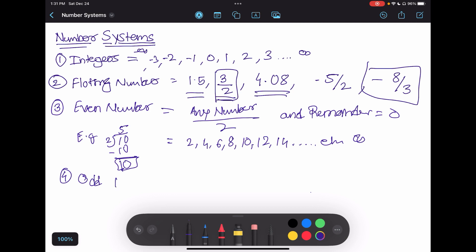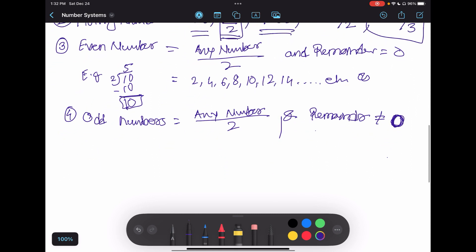The fourth concept is odd numbers. What are odd numbers? If any number is divisible by 2 and remainder is equal to 1, or the remainder is not equal to 0.